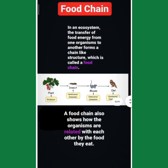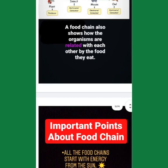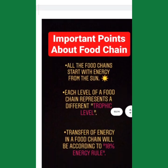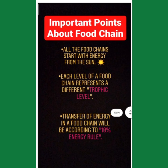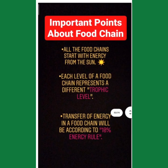Our food chain also shows how the organisms are related to each other by the food they eat. So the food chain tells us that different organisms relate to each other. Now, what are some important points about the food chain? The first important point is that all food chains start with energy from the sun.